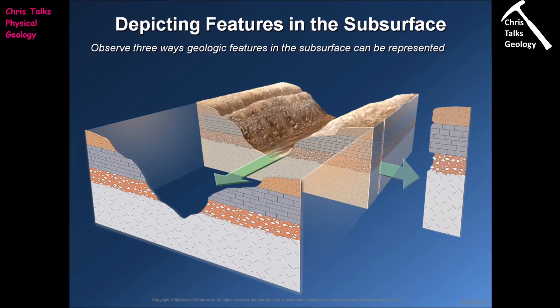The next topic is how geologists depict features in the subsurface. Geologists can only collect data from rocks to which they have access, and most of these rocks are found in outcrops on the surface of the earth. When a geologist goes to an outcrop, there are a few pieces of data we want to collect: the thickness of the layer, and the angle of the layer — is it horizontal, vertical, or going in at 45 degrees?